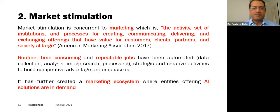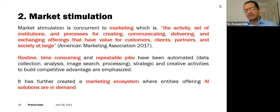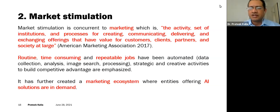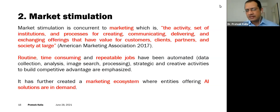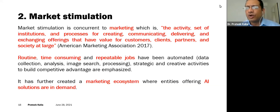Next is market stimulation, which is concurrent to marketing — any set of activities, institutions, and processes for creating, communicating, delivering, and exchanging offerings to customers, clients, partners, and society at large. These activities are routine, time-consuming, and repeatable with a lot of data involved. You can gather, sort, analyze, and process that data to get strategic advantage. Now we have a micro-marketing ecosystem where artificial intelligence can offer a lot of help.